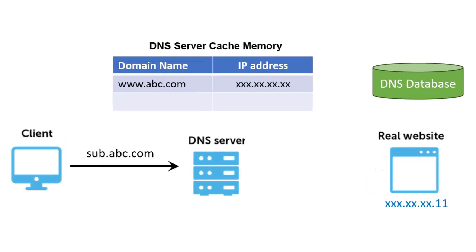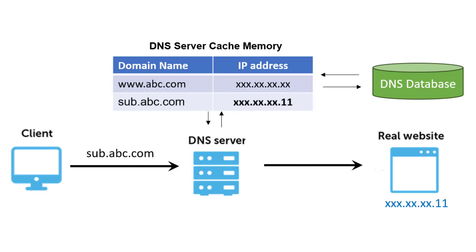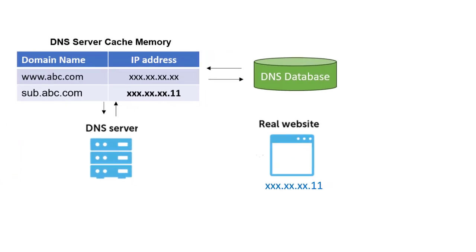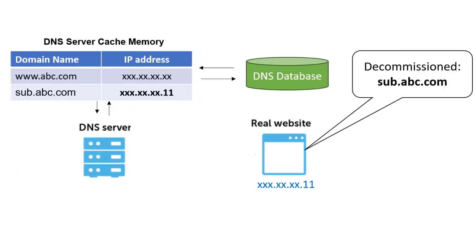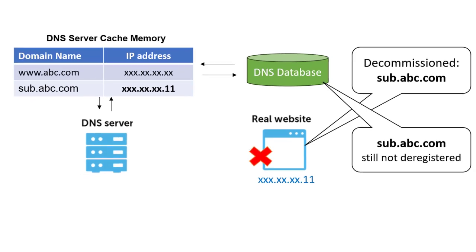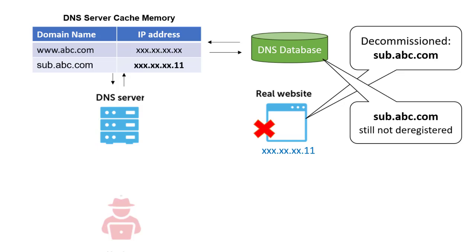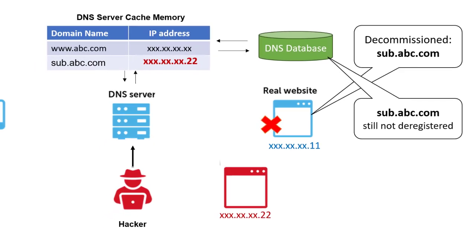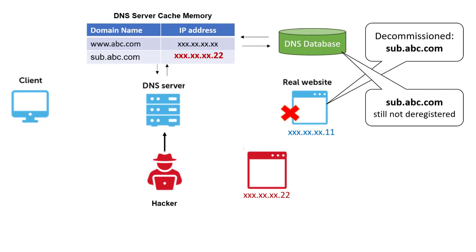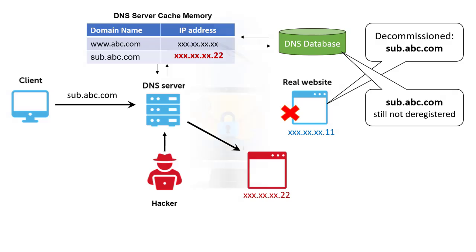Assume a user wants to access a subdomain, say sub.abc.com. The resolution takes place as usual. Later, the website owner decides to decommission the subdomain site but forgets to deregister the IP address — a perfect opportunity for a hacker to insert a fake IP address in the DNS server cache. Subsequent DNS requests for sub.abc.com will then return the IP address of the malicious site.